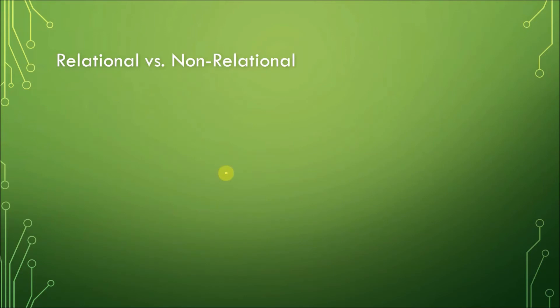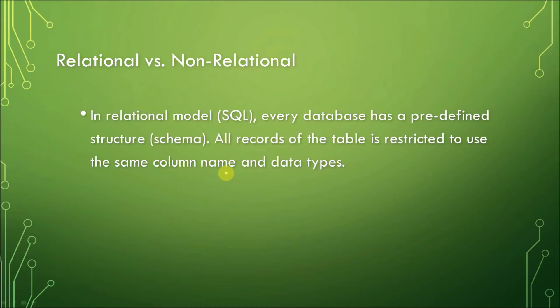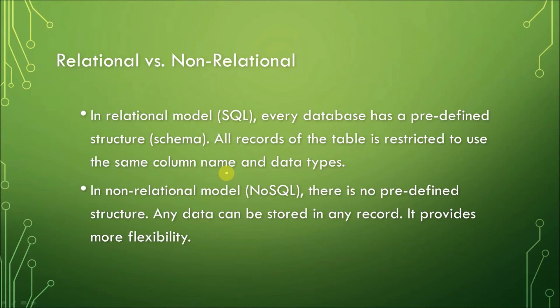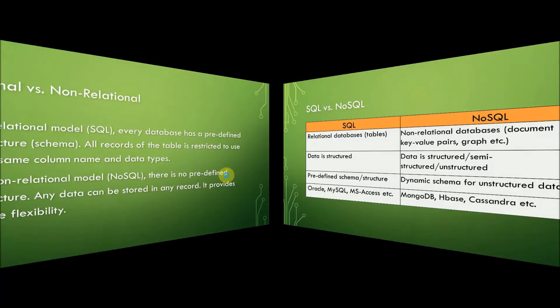Here is another comparison of relational and non-relational databases. In the relational data model, it uses Structured Query Language, and every database has a predefined structure or schema. You have tables associated with other tables, with relationships, and sometimes relationships have attributes — everything is structured. But with the non-relational model using NoSQL, there is no predefined structure, meaning it is schema-less. Any data can be stored in any record, providing more flexibility, and it is scalable — open to expansion into handling large volumes of data.